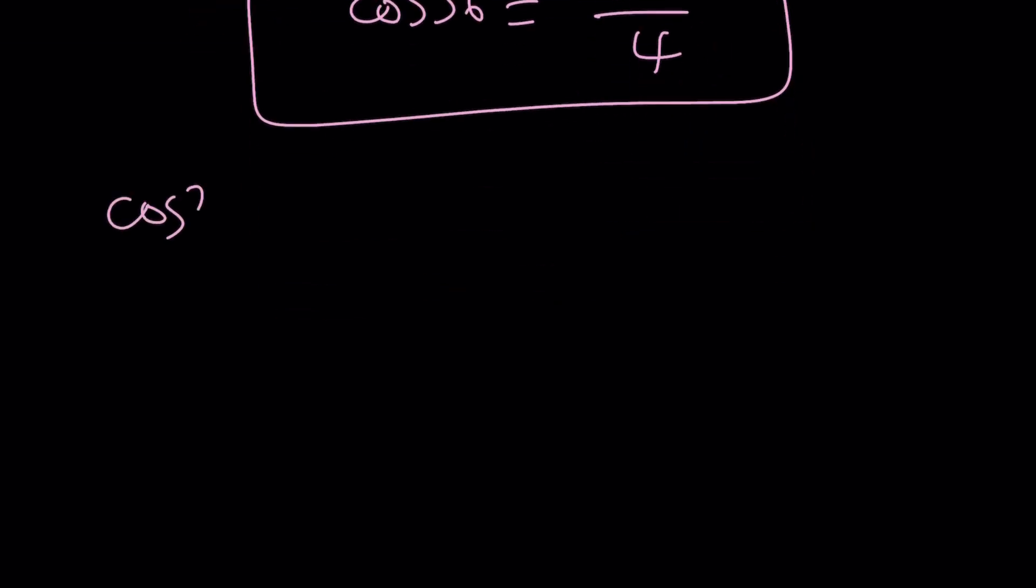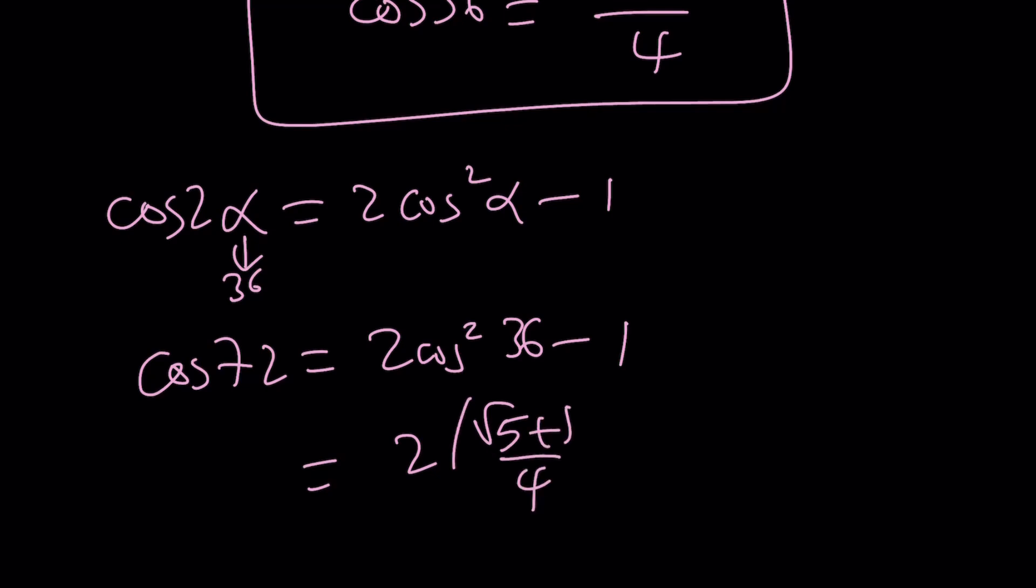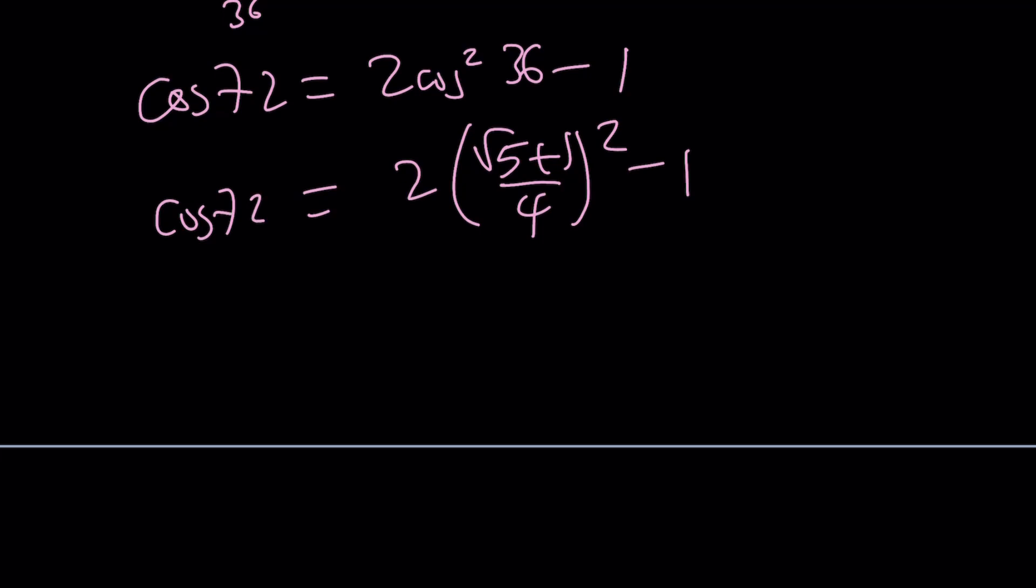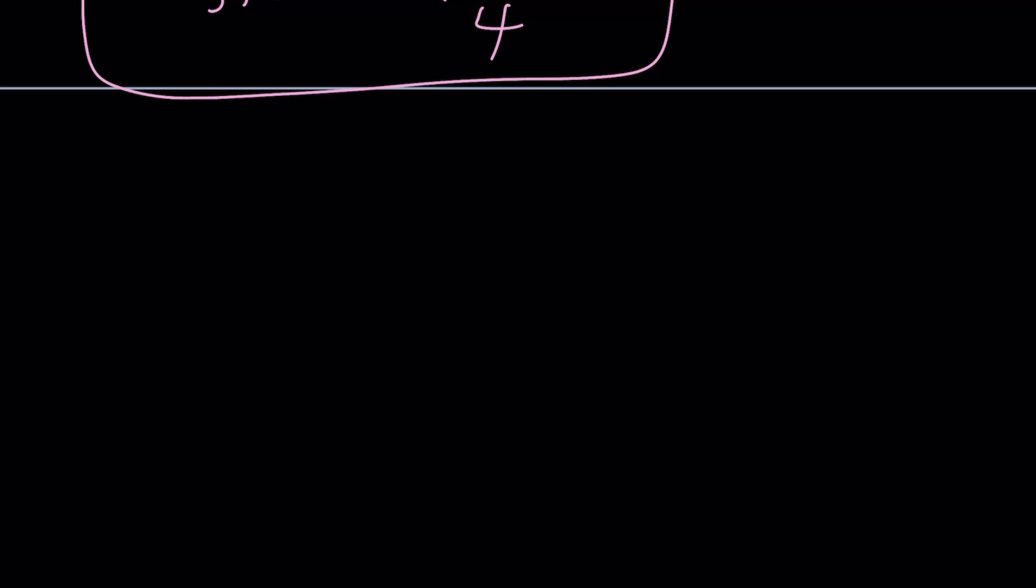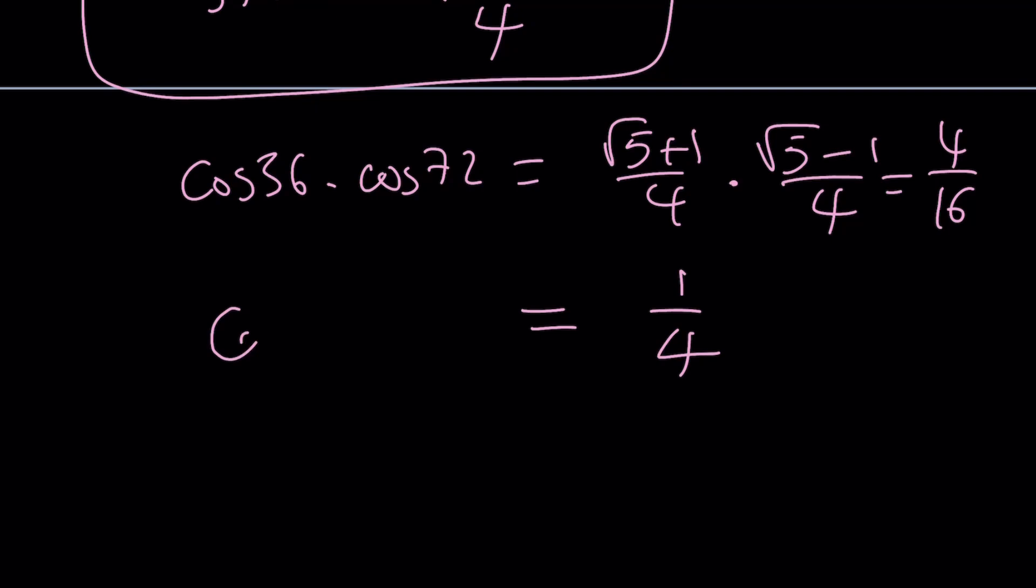This is the value of cosine 36 degrees. Let's use the double angle formula. Cosine 2 alpha equals 2 cosine squared alpha minus 1. Replace alpha with 36. And you're going to get cosine 72 equals 2 cosine squared 36 minus 1, which is 2 times root 5 plus 1 over 4 squared minus 1. And if you simplify this, you're going to get root 5 minus 1 over 4. Cosine 36 and cosine 72 are conjugates. That's why we're going to multiply them to find the answer. Cosine 36 times cosine 72 equals root 5 plus 1 over 4 multiplied by root 5 minus 1 over 4. That would be 5 minus 1, which is 4 over 16. Therefore, the answer in the simplest form would be 1 fourth. And this brings us to the end of the first method.